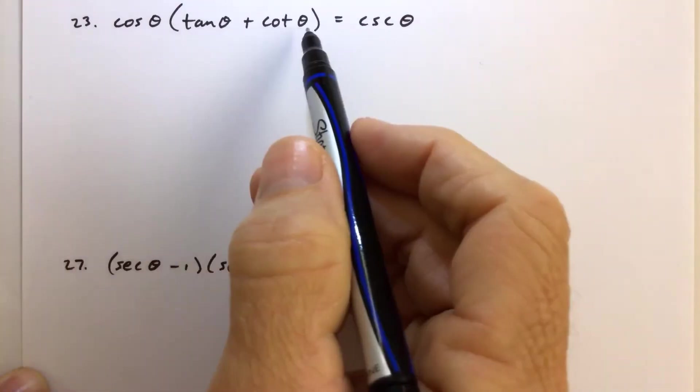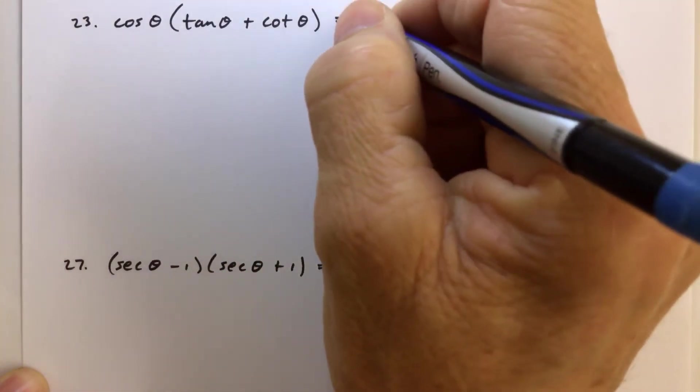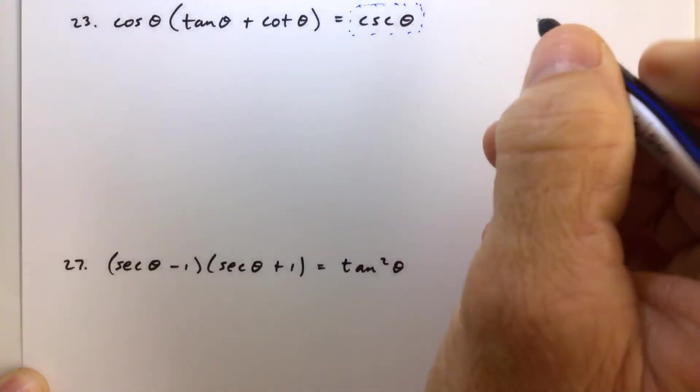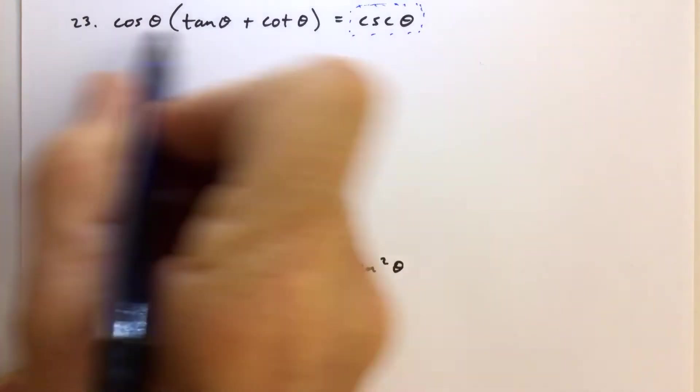So clearly, the left side of the equation is the more complicated side. So we're going to put a box around the side that we're not going to touch, and then we're just going to work on the other side.